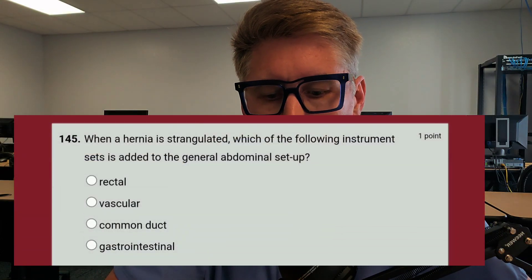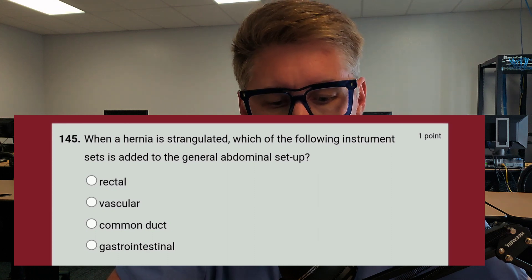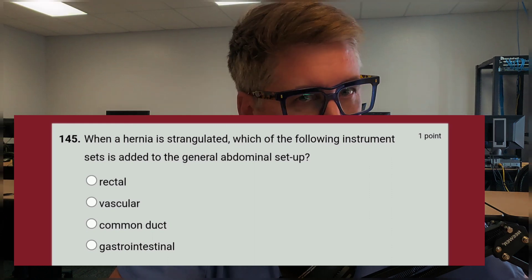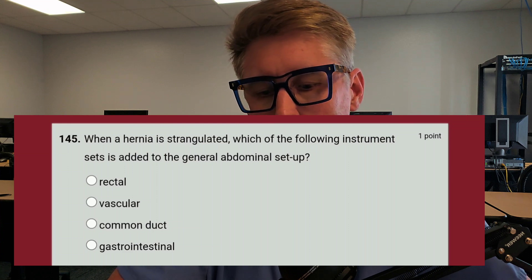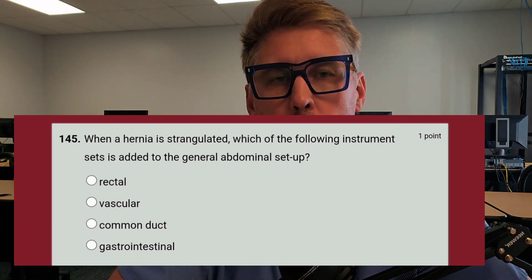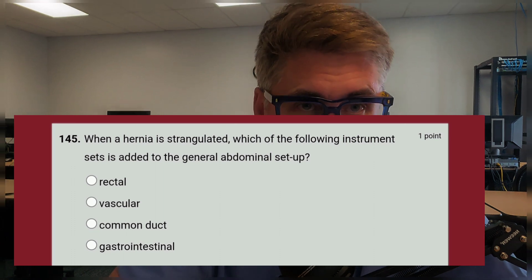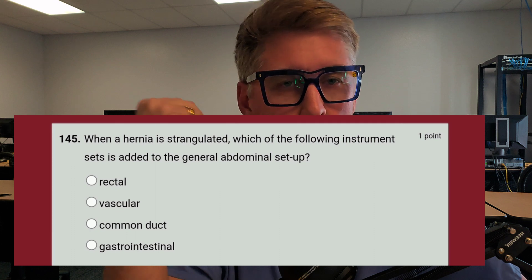We're going to make these videos as short as possible. Each week, three questions — stay to the end and I'll give you a bonus one. Third question: when a hernia is strangulated, which of the following instrument sets is added to a general abdominal setup? Is it A, rectal; B, vascular; C, common duct; or D, gastrointestinal? Look at that question, surgically map it. Do you understand what a hernia is? Do you know what a strangulated hernia is? Go ahead and put your answers in the comments.